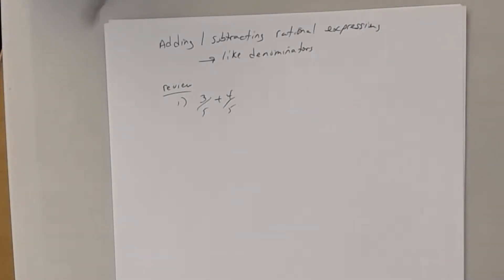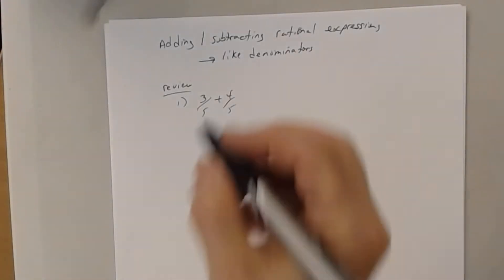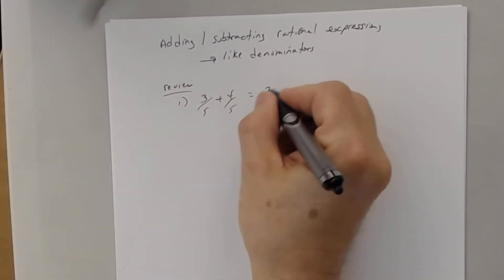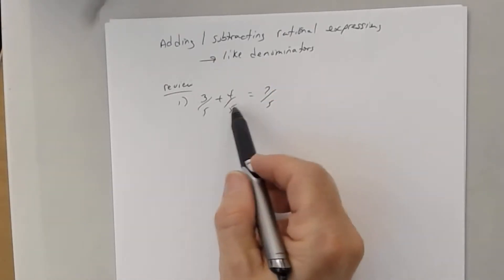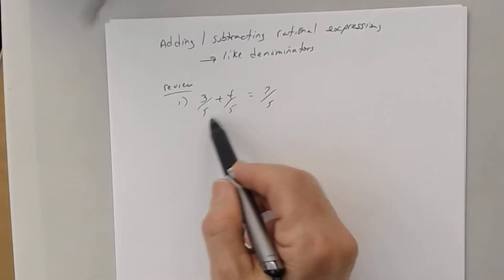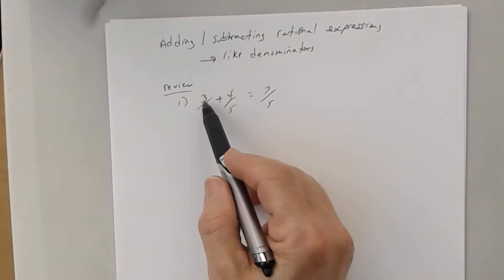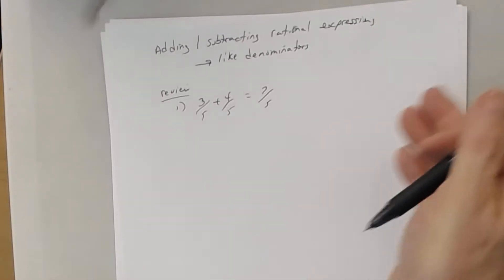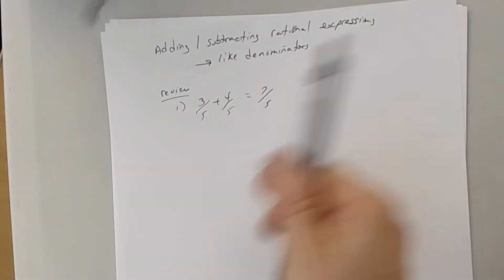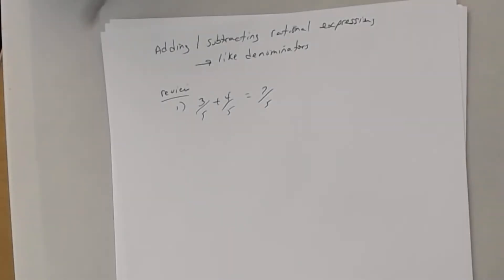Because the denominators are the same - your partitions are equivalent. So you have 3 fifths plus 4 fifths; altogether, how many fifths do you have? Seven. So that becomes 7 fifths. When you're adding and subtracting fractions and the denominators are the same, you just add or subtract the numerators, and write it with that same partition - in this case, 5.